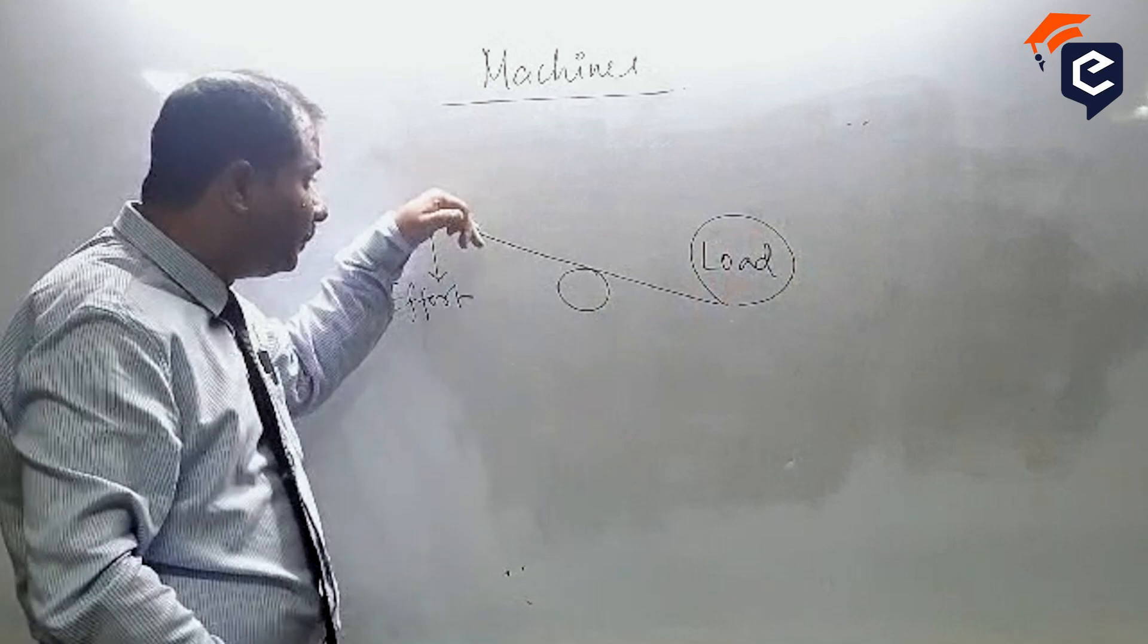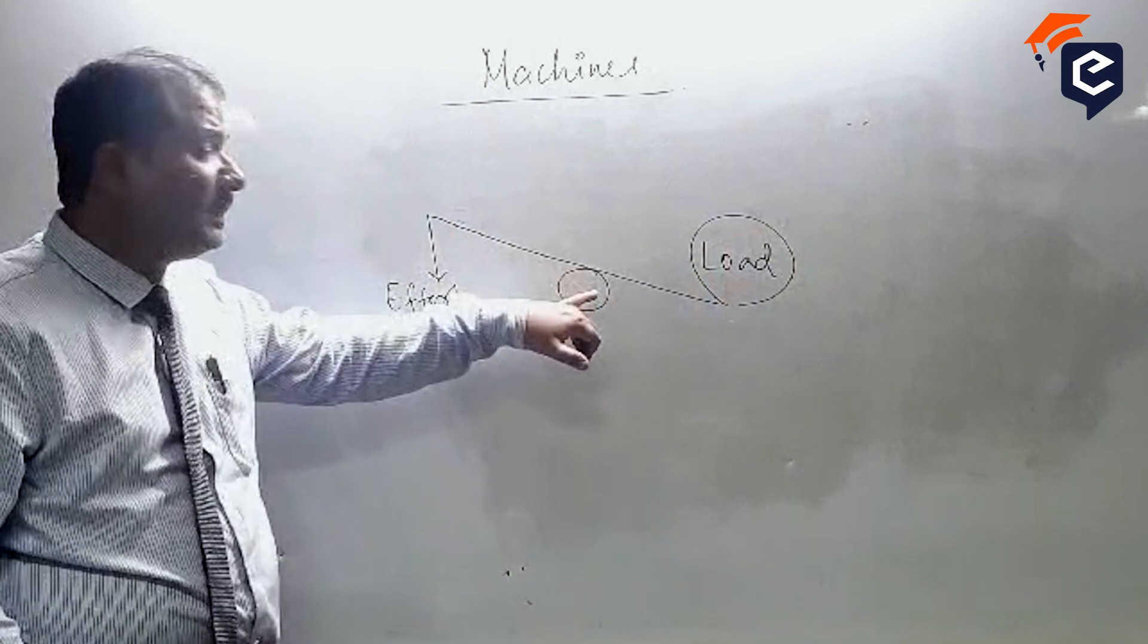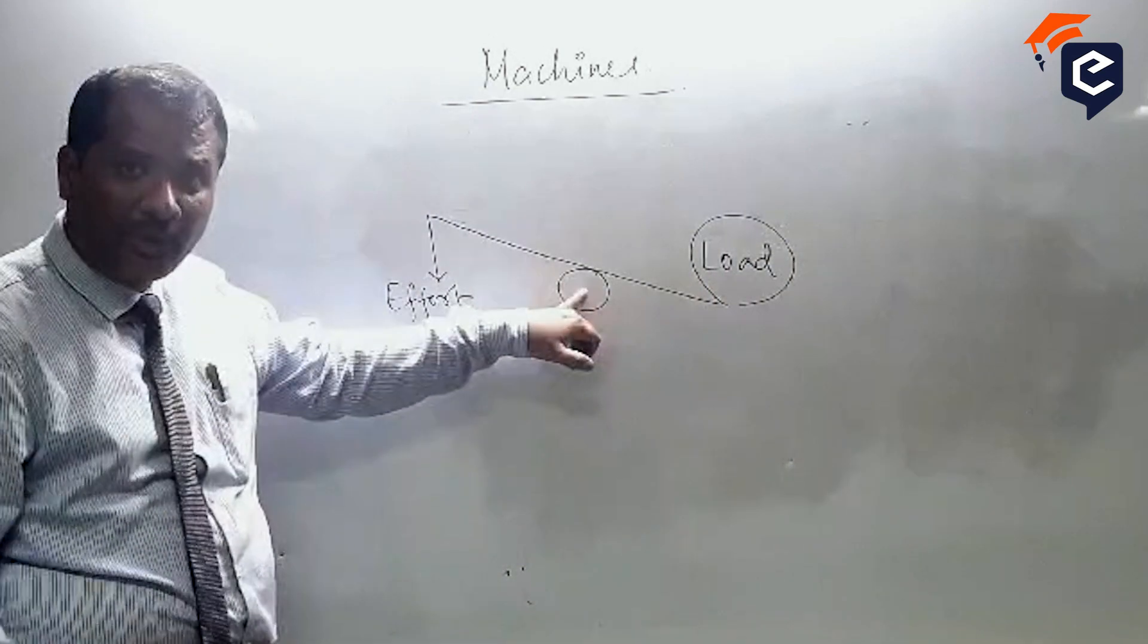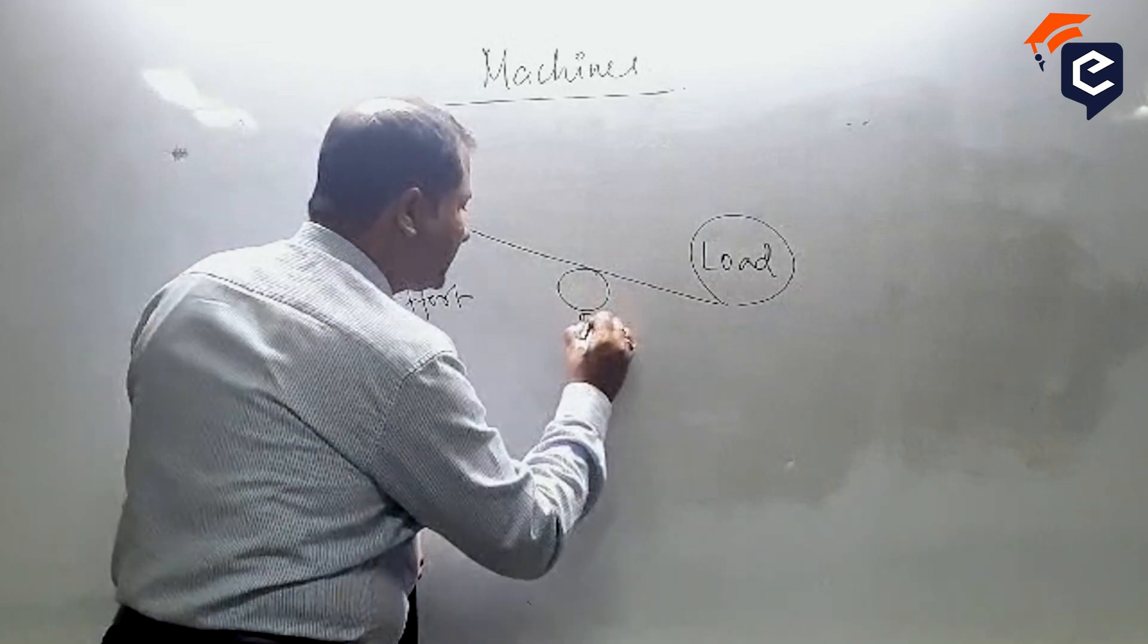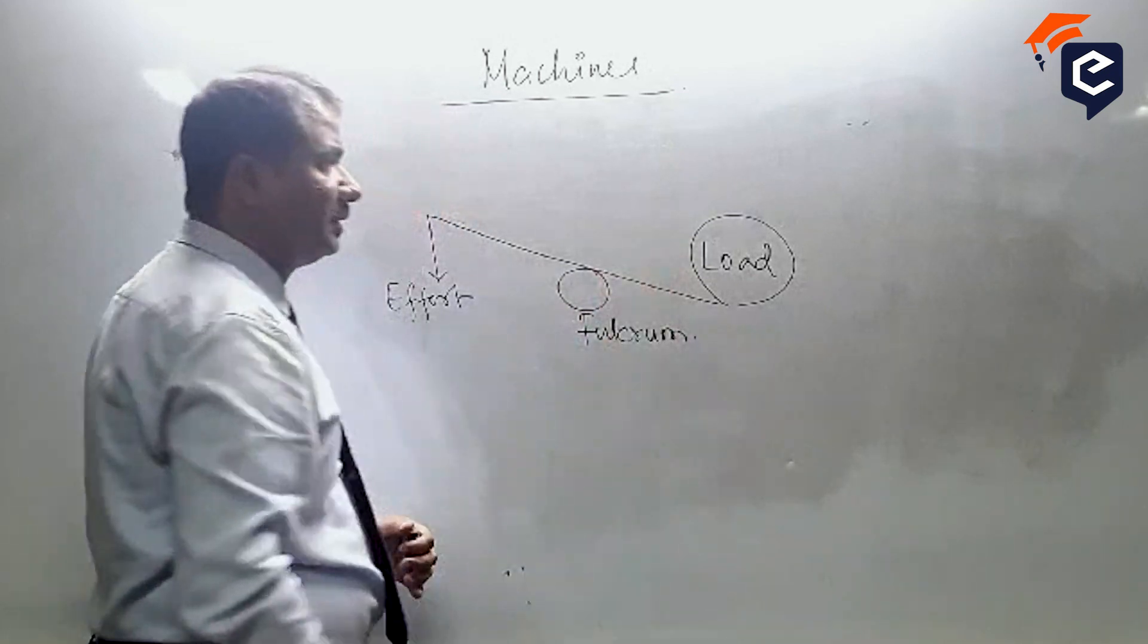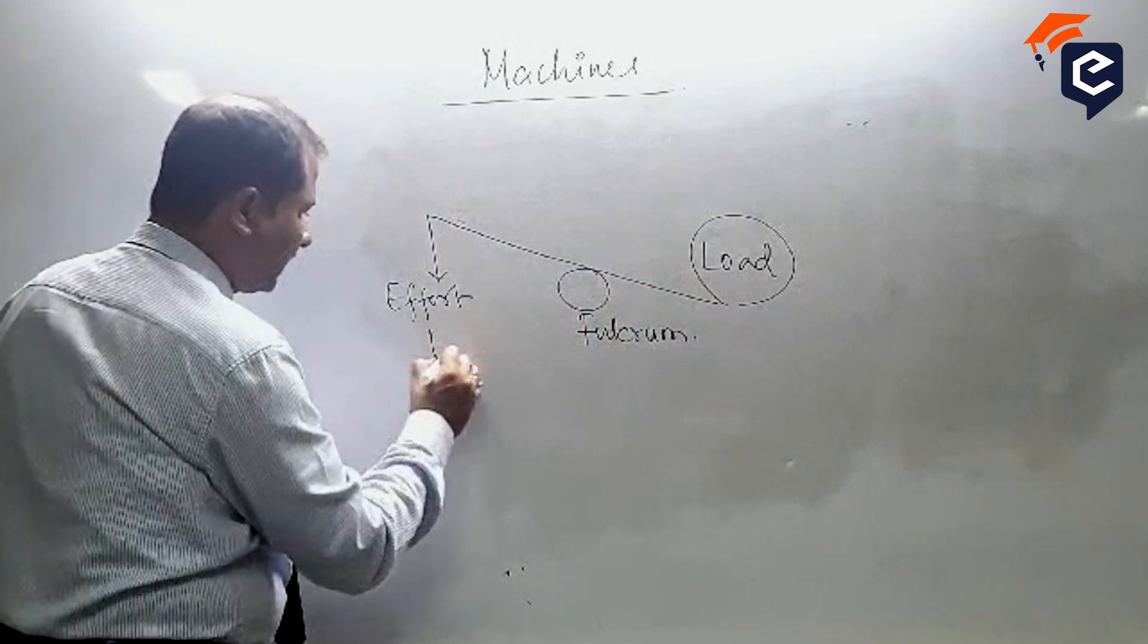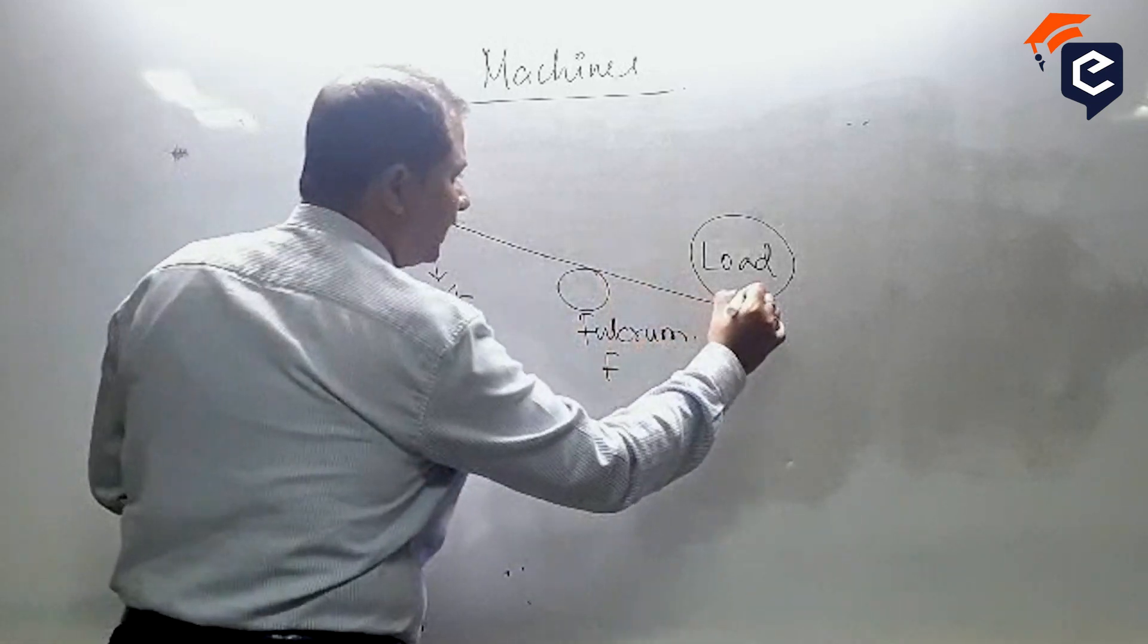And I am doing this by keeping this as my pivotal point. So this is called fulcrum. In short, let's write this as E, F, L.